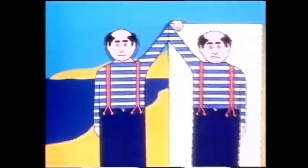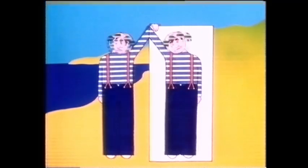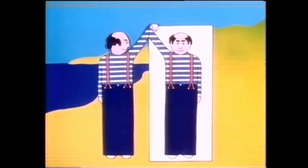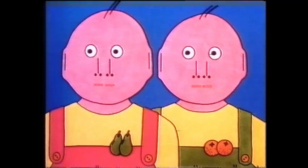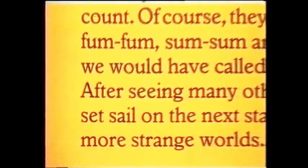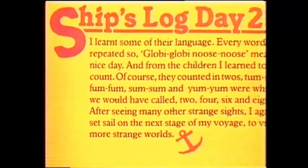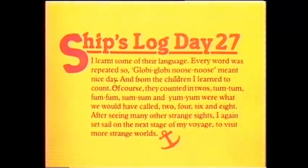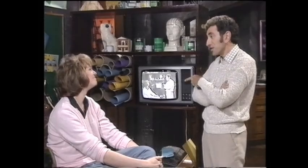At that time I took to walking about carrying a full length mirror so people would always see two of me. I wasn't quite as one of them, but it made things easier between us. I learned some of their language. Every word was repeated, so 'globy globy noose noose' meant 'nice day,' and I learned to count: tum tum, fum fum, sum sum, and yum yum were what we would have called two, four, six and eight. After some days I set sail on the next stage of my voyage, wondering what strange world I would chance upon next. Evens, evens, odds, odds. On, on, off, off. On, on, off, off.